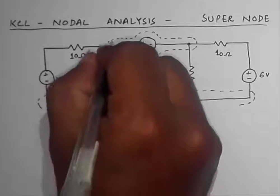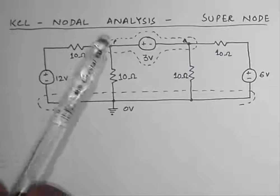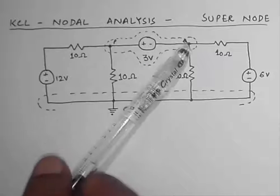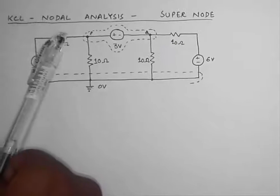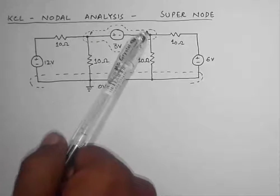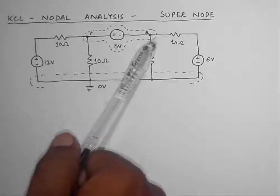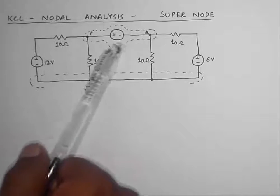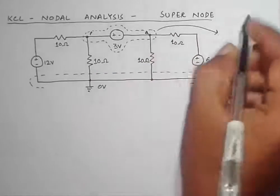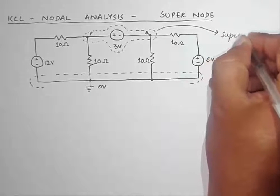You can see this 3 volt voltage source, and this is present between these two nodes. I am going to name these nodes P and Q, and this voltage source is present between these two nodes. None of them are reference nodes — P and Q both of them are non-reference nodes. So these two nodes and this voltage source will collectively constitute a supernode.